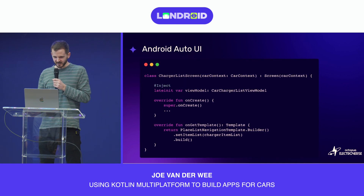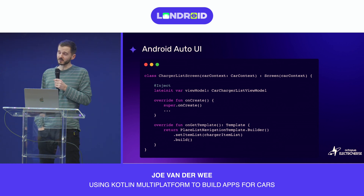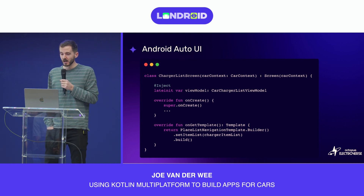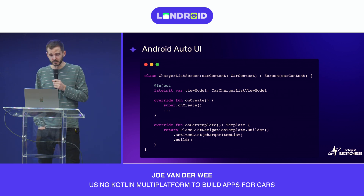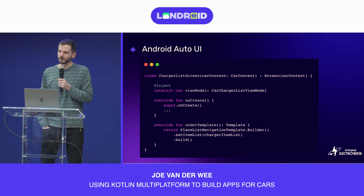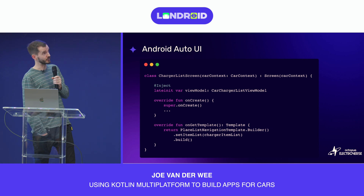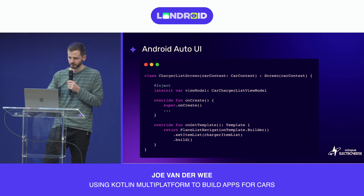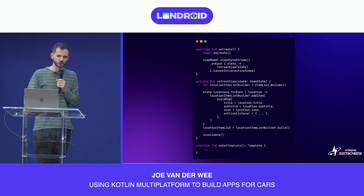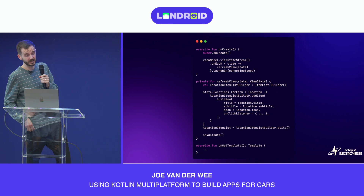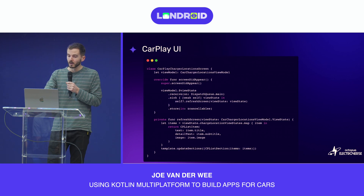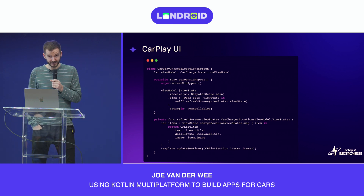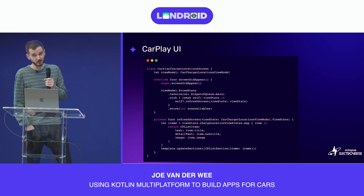For Android Auto, we have a Screen — analogous to a fragment or composable destination — with lifecycle methods like onCreate that will be familiar to Android developers. It also has an onGetTemplate function in which we use template builders to define our UI. We inject our view model, which is imported from the shared car module, and consume a view state from it to build a list of locations to show in the template. Switching over to CarPlay, things are very similar — we inject the same view model used on Android Auto, then consume a view state to create items for a list template.